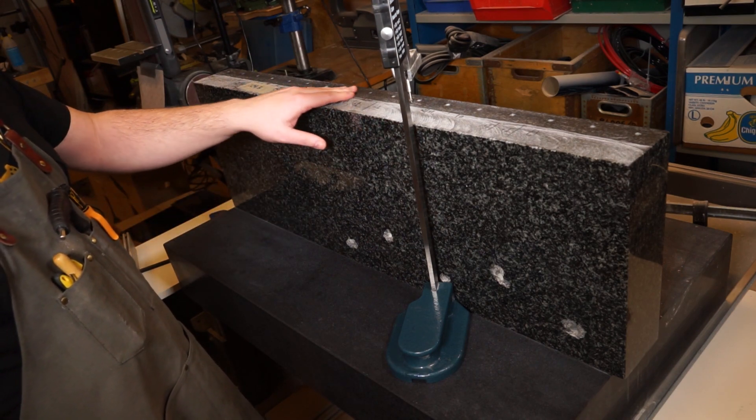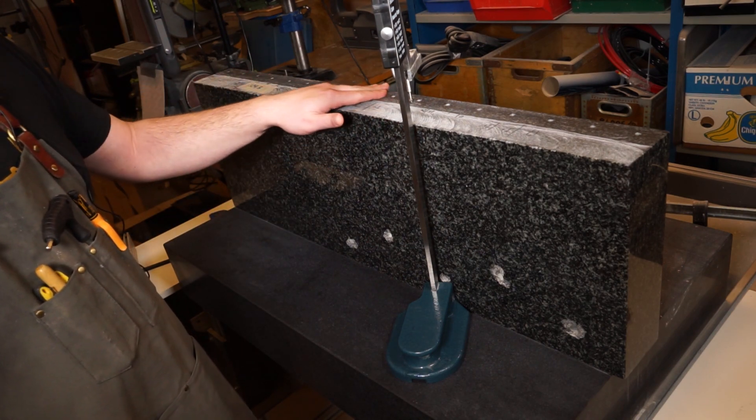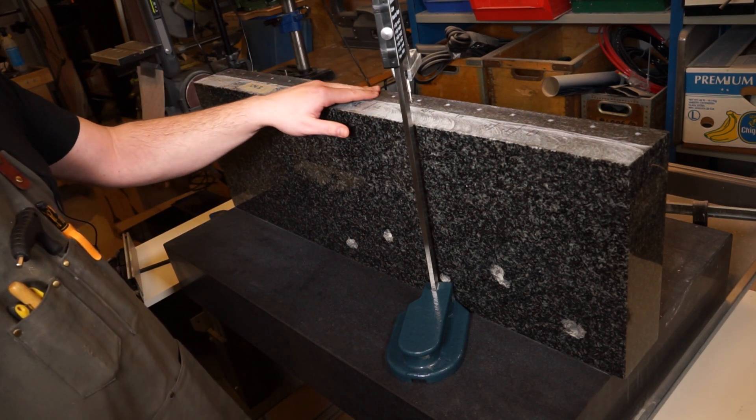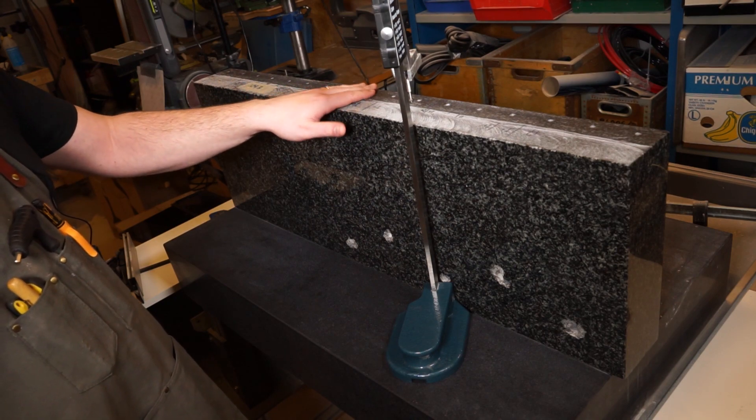But they are now parallel to within plus minus five microns across the whole length of the rail, where the rail is going to be mounted.